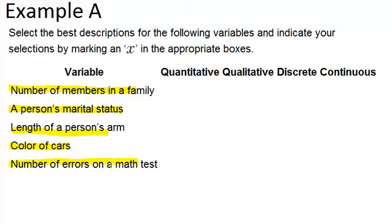For each one our job is to figure out is the variable quantitative or qualitative and is the variable discrete or continuous. So for each of these five variables we'll have two different check marks. Well actually only if it's a quantitative variable will we have to decide if it's discrete or continuous. If it's qualitative we'll only have that one check mark and that's it.